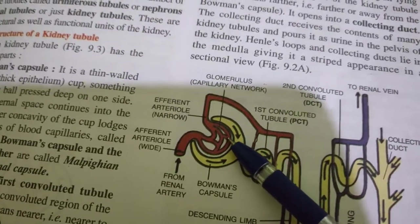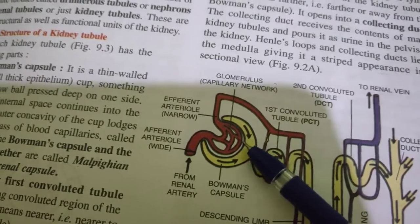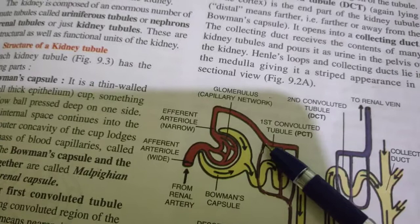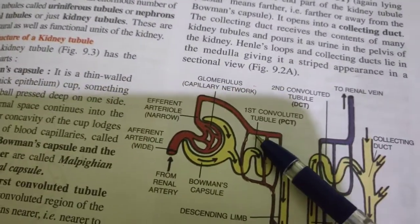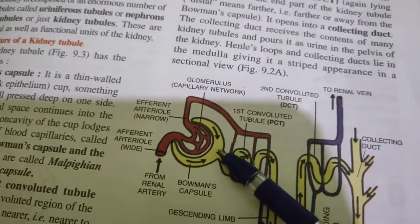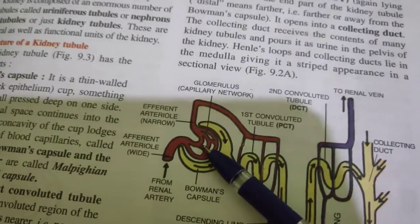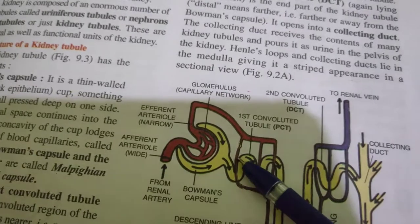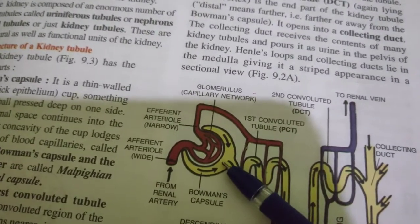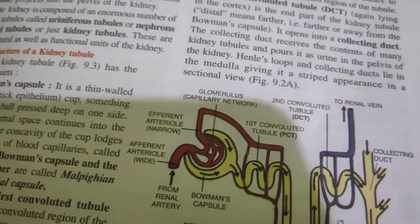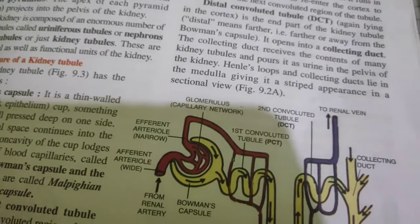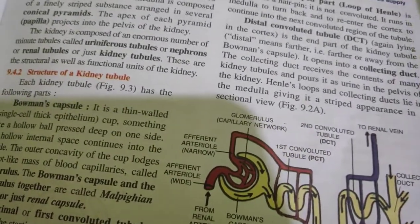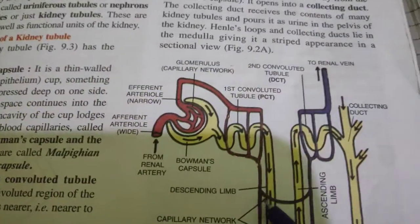During this process, almost all the liquid part of the blood, including urea, glucose, and amino acids, comes out of the glomerulus and passes into the cavity of Bowman's capsule. This fluid entering the renal tubule is called glomerular filtrate, and it consists of water, urea, salts, glucose, and other substances.